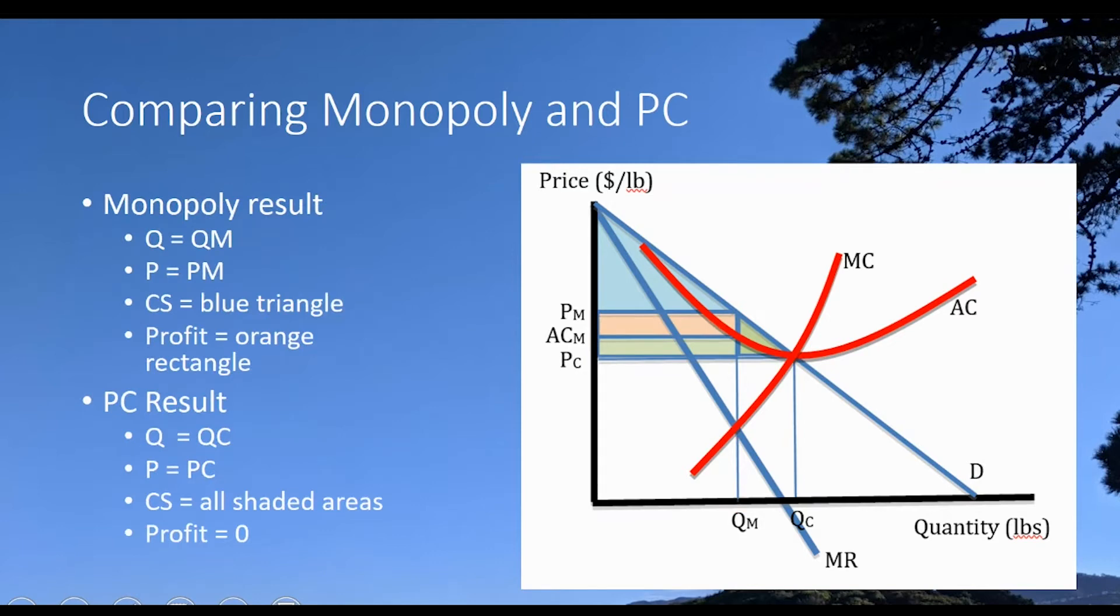So the monopoly result is set Q equals QM, price equals PM. Consumer surplus is going to turn out to be the blue area right here. Profit is going to turn out to be the orange rectangle right here, and so what would happen in a monopoly market is the quantity would be here at QM, surplus would accrue to consumers, profits would accrue to the producers, this conglomerate operating all these little firms, and this would be the outcome in the marketplace.